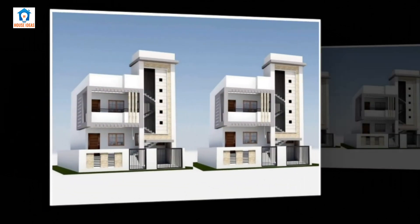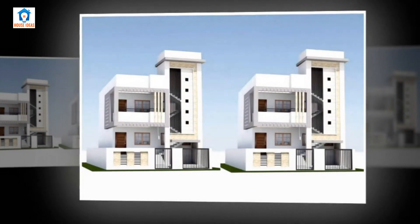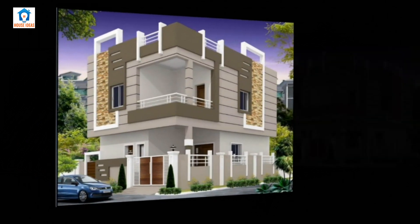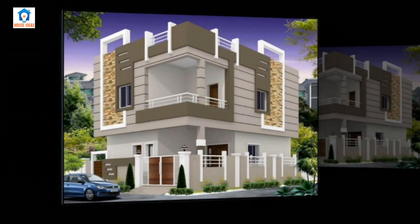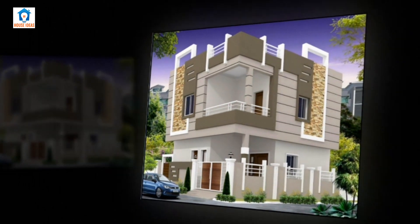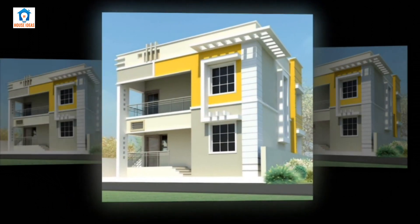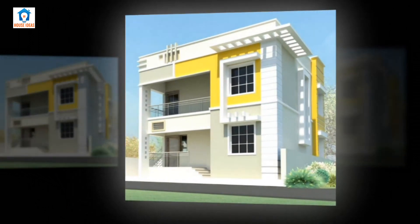Historically, buildings have been drawn by hand on two-dimensional paper, so orthogonal projection and the drawing of two-dimensional plans and elevations have been the standard means of representation. However, increasingly buildings are being drawn using computer-aided design or building information modeling software that represents them in three dimensions. Two-dimensional elevations can be generated from these 3D models and do not need to be drawn individually.